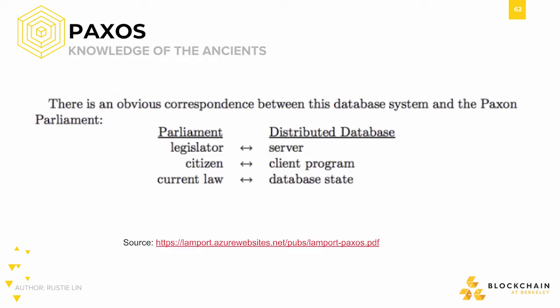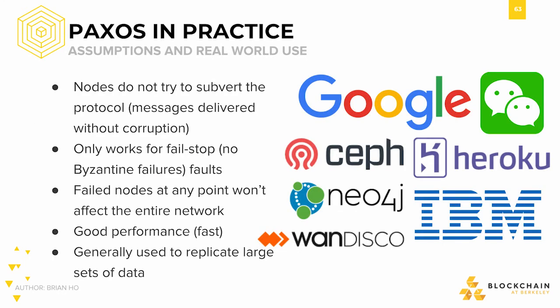There's a very clear parallel between the Paxon Parliament and distributed consensus. As Lamport put it in his paper, there's an obvious correspondence between this database system and the Paxon Parliament. Individual nodes within a distributed system are like the legislators, since they're the ones whose job it is to serve the clients and come to consensus, and then propose or take action on the result. The state of the distributed database is like the current law passed by the parliament. One major assumption that Paxos makes is that nodes aren't trying to subvert the protocol, and that messages are delivered without corruption — in other words, Paxos only works for the fail-stop scenario, and does not account for Byzantine faults.